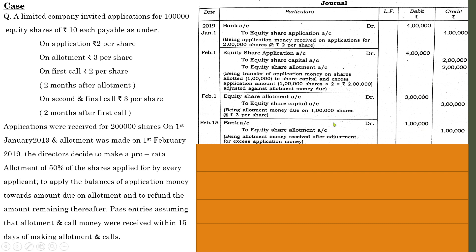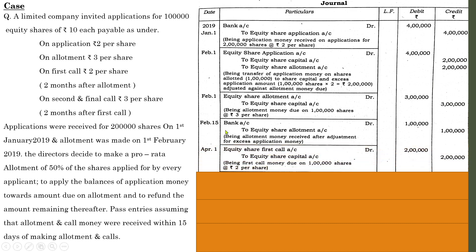Next, pass the entry with regard to the first call. Date is April 1 — two months after allotment on February 1st. Entry: equity share first call account debit to equity share capital account. The value of first call is rupees 2 per share on 1 lakh shares, so 2 into 1 lakh equals 2 lakhs. Being first call money due on 1 lakh shares at rupees 2 per share.